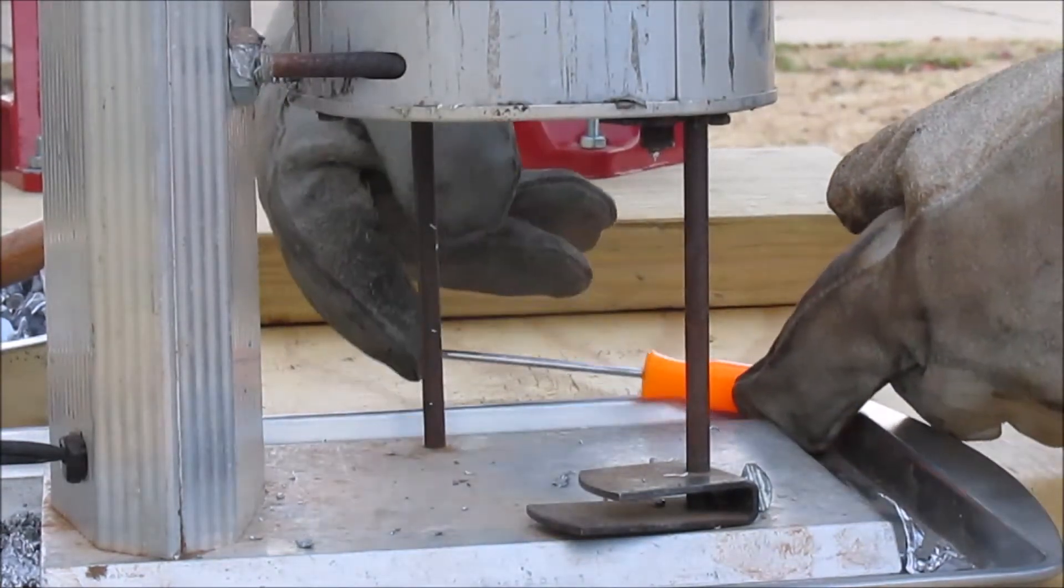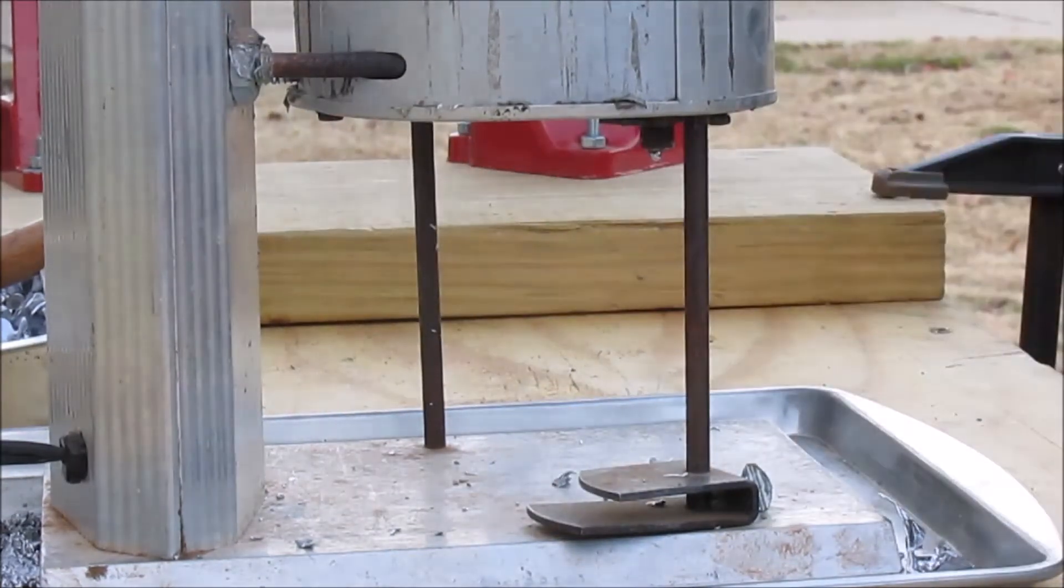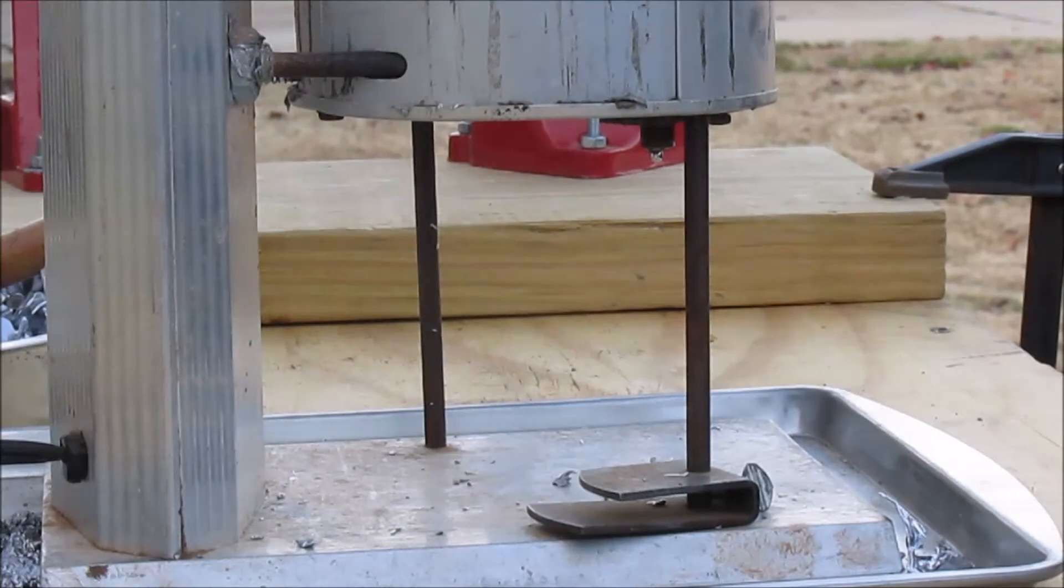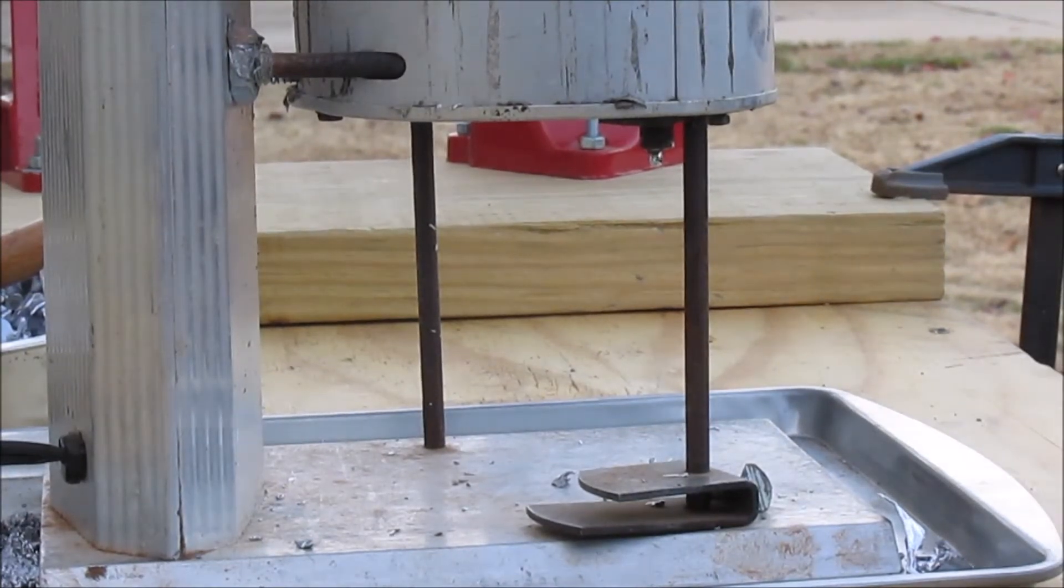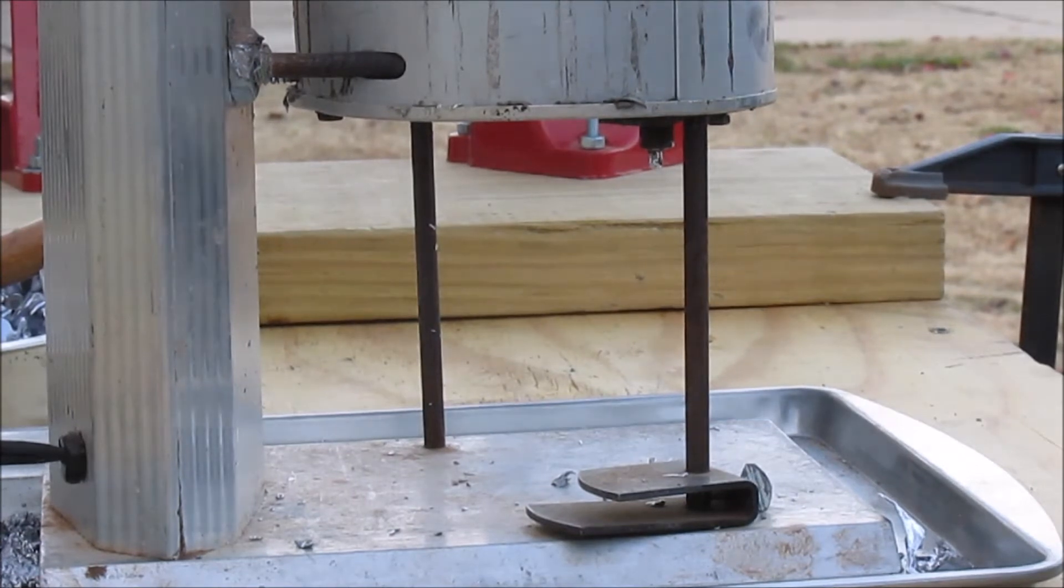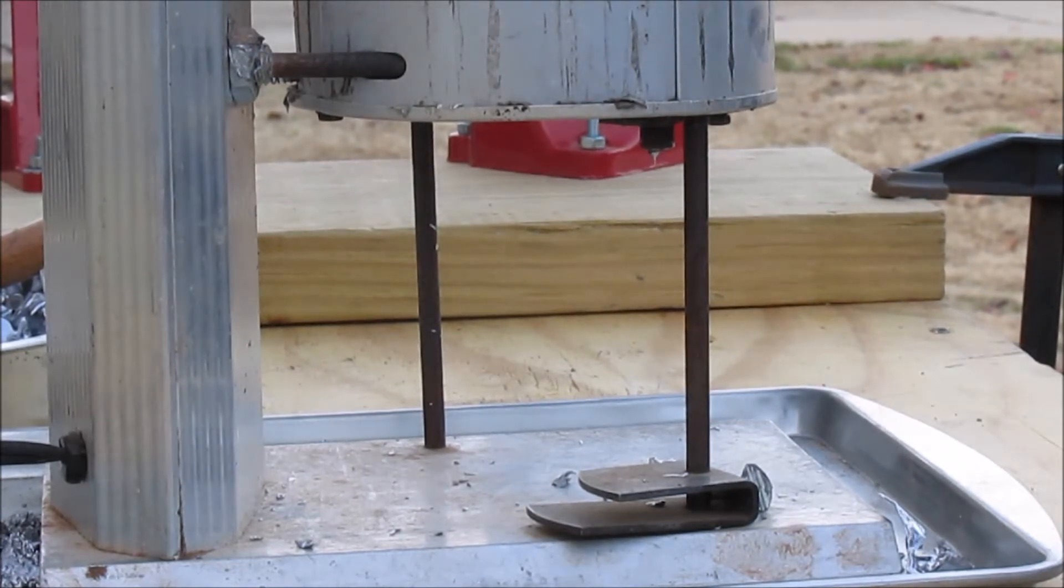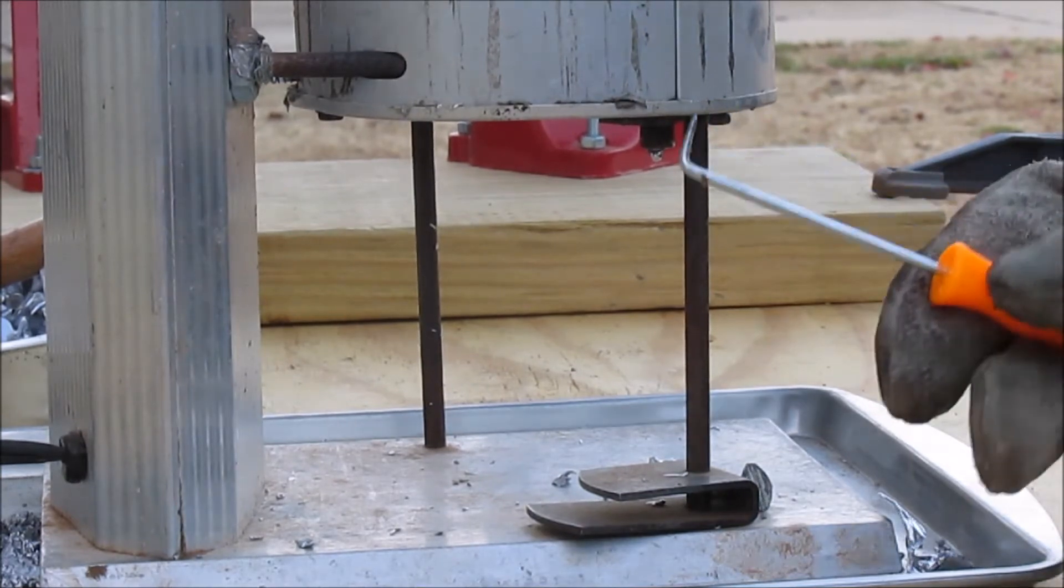A lot of people use a paper clip or other things to clean out your funnel or clean out your bottom pour spout. What I've found that works really well and is inexpensive or even free is a lock pick.